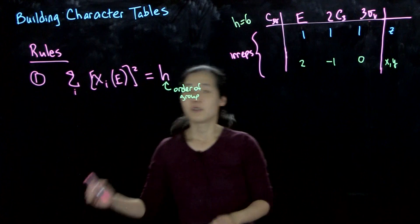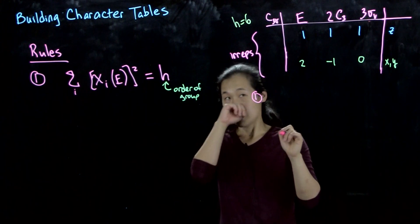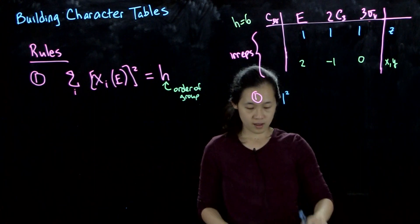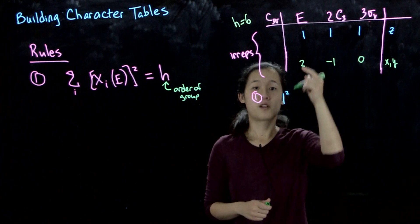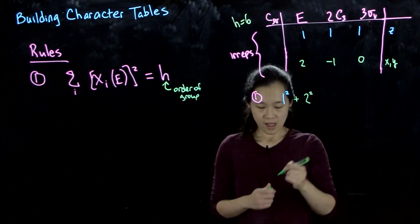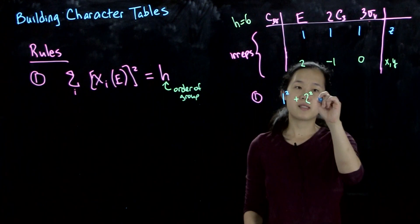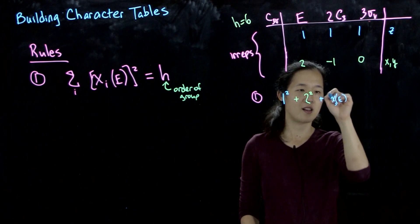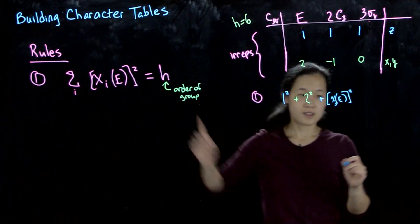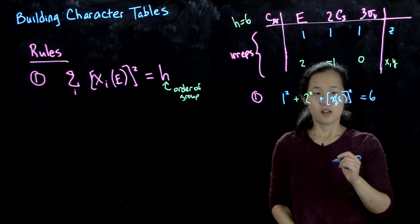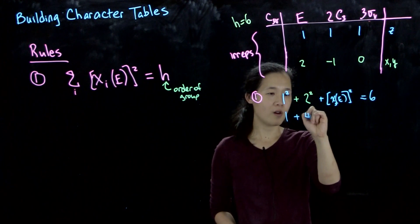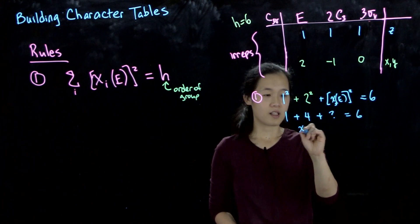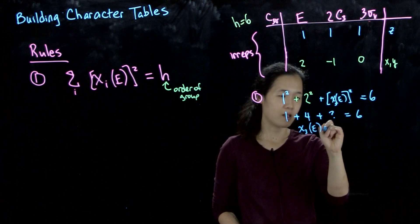So if we're going to try to test out this rule, what we're saying is rule one is that the order under one squared plus two squared, because this is the order under the second row, plus any missing row chi E squared, it's got to be equal to six. So overall what this means is that one plus four plus question mark equals six.